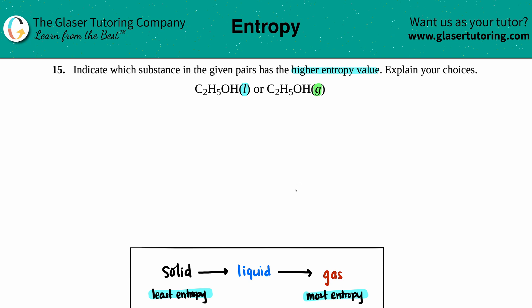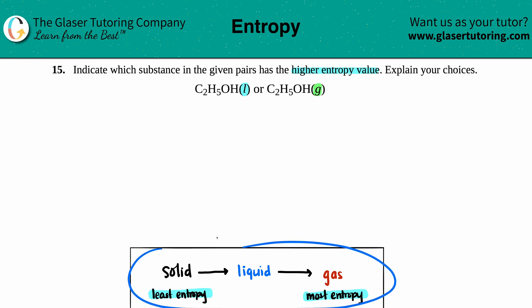This will be kind of easy because anytime that you have different states, always look for that first — don't even bother looking at the compound. In this case the compound is the same, so we can't go by that anyway. Now if we have different states, the reasoning is down here.